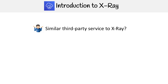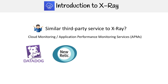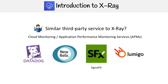To help understand X-Ray, let's look at some third-party services that are similar in cloud monitoring or application performance monitoring. These services are starting to add distributed tracing as well. The number one service is Datadog, which does APM, log monitoring, and more. Then there's New Relic, which was traditionally just application monitoring for large applications but can now do considerably more. SignalFX is similar to Datadog but more real-time. And then there's Lumigo, which is focused on serverless monitoring — it looks a lot like X-Ray but with a heavy emphasis on serverless services. Looking those up will give you a better perspective on how X-Ray fits in this market.